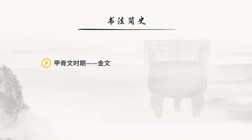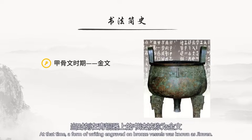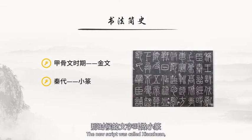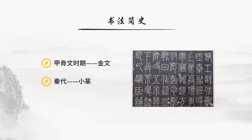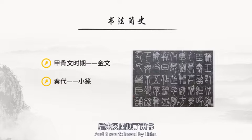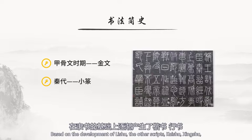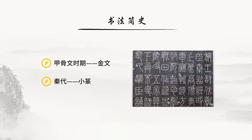书法是中国传统的汉字书写艺术，其历史源远流长，最早从甲骨文时期就开始了。当时刻在青铜器上的书法被称为金文。秦始皇统一中国后，文字也随之统一，那时候的文字叫做小篆，也称为篆书。后来又出现了隶书，在隶书的基础上逐渐产生了楷书、行书和草书。